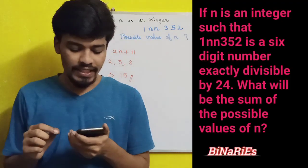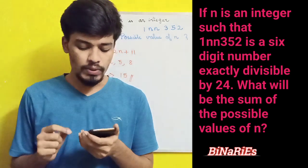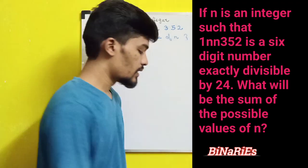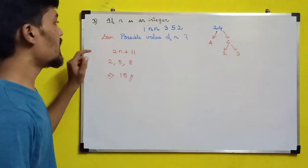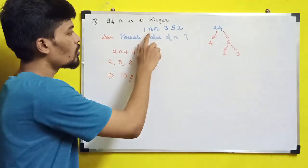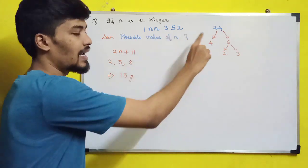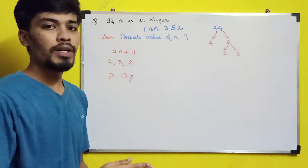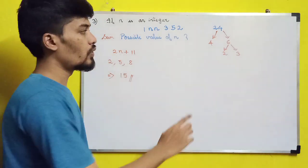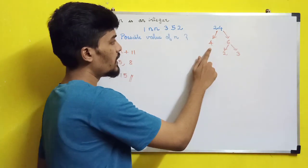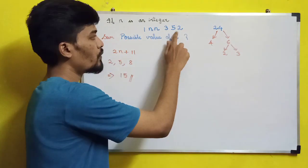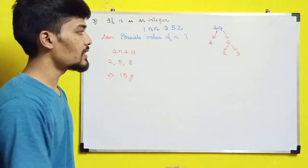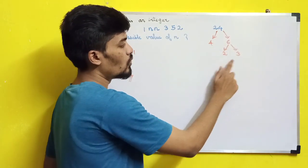The next question: if n is an integer such that 1nn352 is a six-digit number exactly divisible by 24, what is the sum of the possible values of n? We need the divisibility rule for 24. Since 24 = 4 × 6, we check divisibility by 4 and 6. The last two digits 52 are divisible by 4, and the unit digit 2 is even, so divisibility by 2 is satisfied.